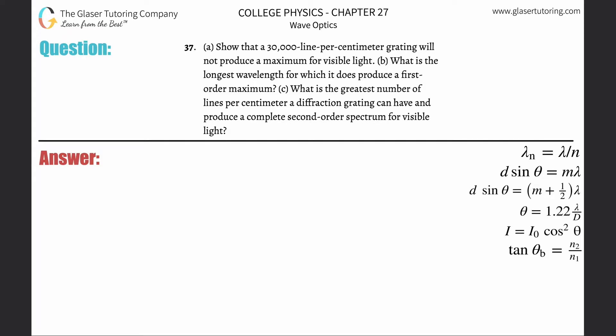Number 37: Show that a 30,000 line per centimeter grating will not produce a maximum for visible light. We're talking about maximums, therefore we're using the constructive formula on the right-hand side. We just used it for the past 35 problems. So all we're going to do here is show that this 30,000 line per centimeter grating will not produce a max.